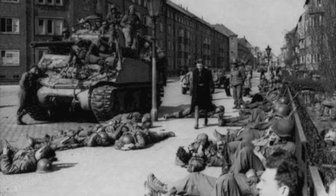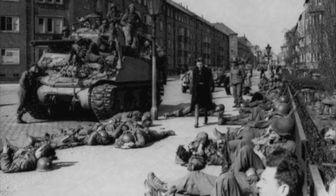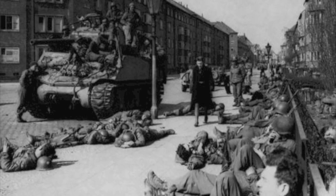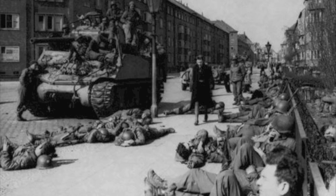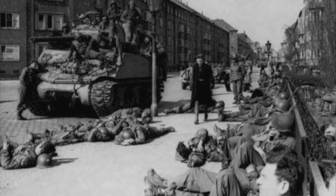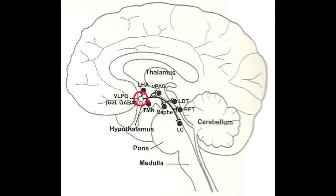During World War I, the world was swept with a pandemic called encephalitis lethargica, which is a viral infection of the brain that causes a prolonged state of sleepiness in most individuals. By studying individuals with this viral infection, von Economo predicted a wake-promoting area in the posterior hypothalamus and a sleep-promoting region in the pre-optic nucleus. Studies over subsequent years proved von Economo's predictions to be correct.